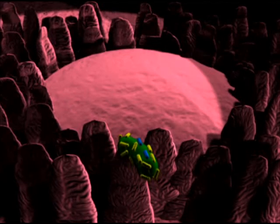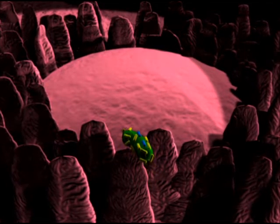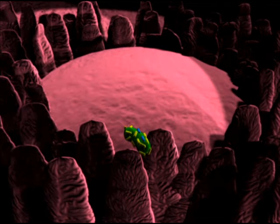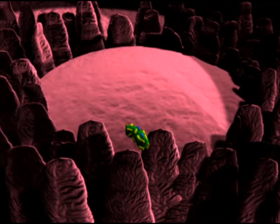Then there are microfold cells, also called M-cells, located in areas known as Peyer's patches. These can also capture Bio-Mos.